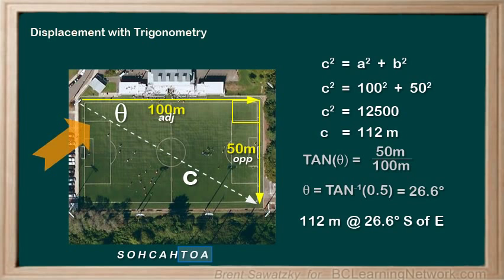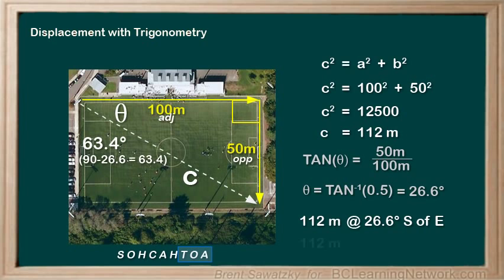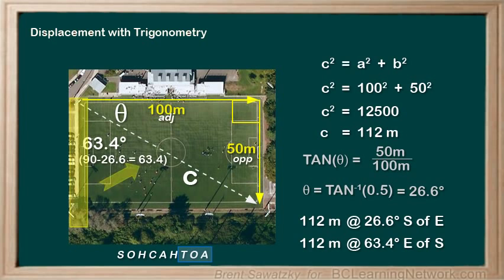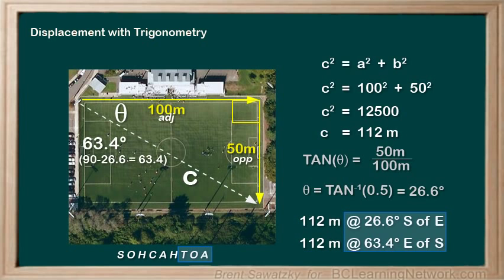Note that if you solved for the other angle, you'd come up with 63.4 degrees — and 90 minus 26.6 degrees is 63.4 degrees, which shouldn't be a surprise. In that case, you might answer 112 meters at 63.4 degrees east of south, meaning you start at south and move 63.4 degrees toward the east. Either answer is perfectly correct, as they have the same magnitude and are just two different ways of describing the exact same direction.